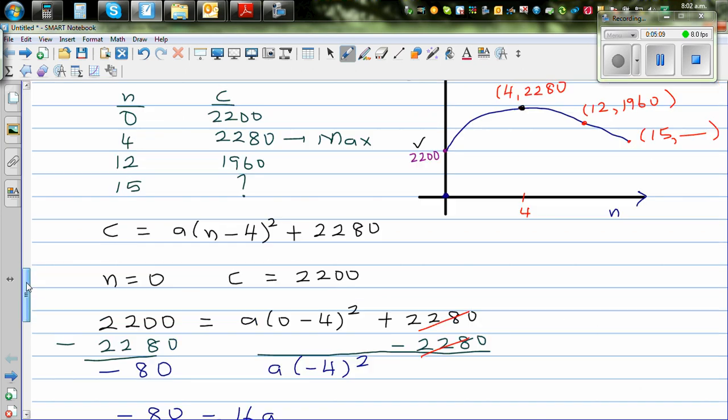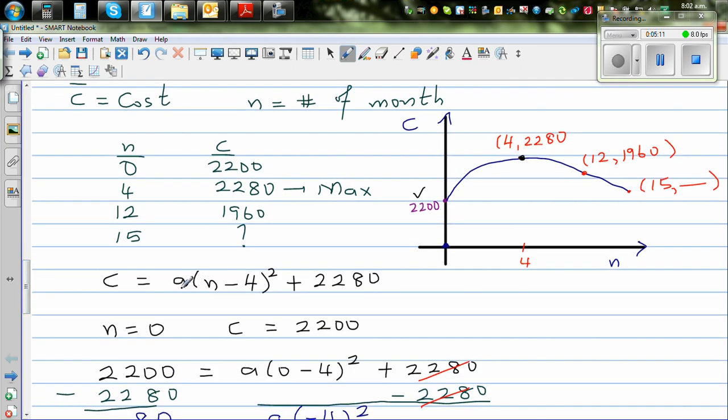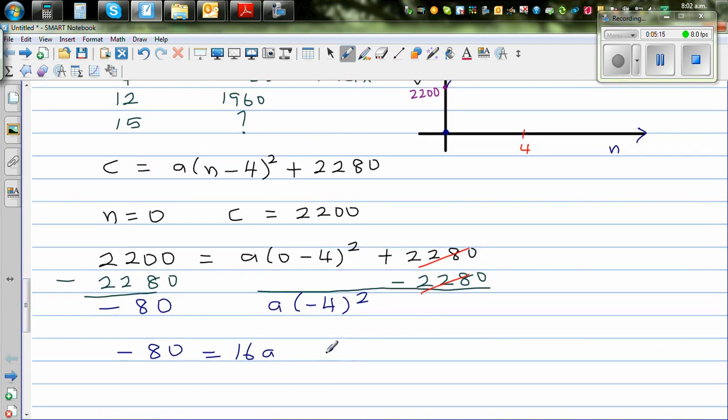Now even before you write the equation, you should know the value of A should be negative because it's upside down. So you divide both sides by 16. Minus 80 divided by 16 equals 16A divided by 16. 16 gets cancelled. This implies A is minus 5.